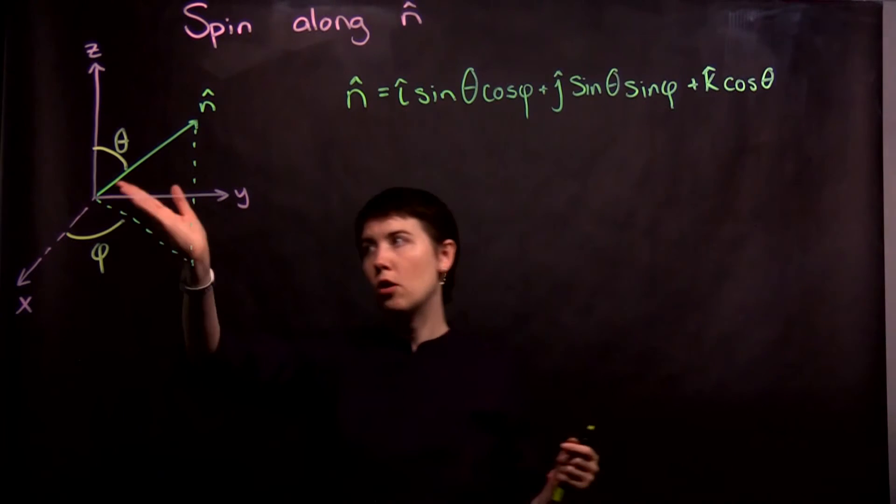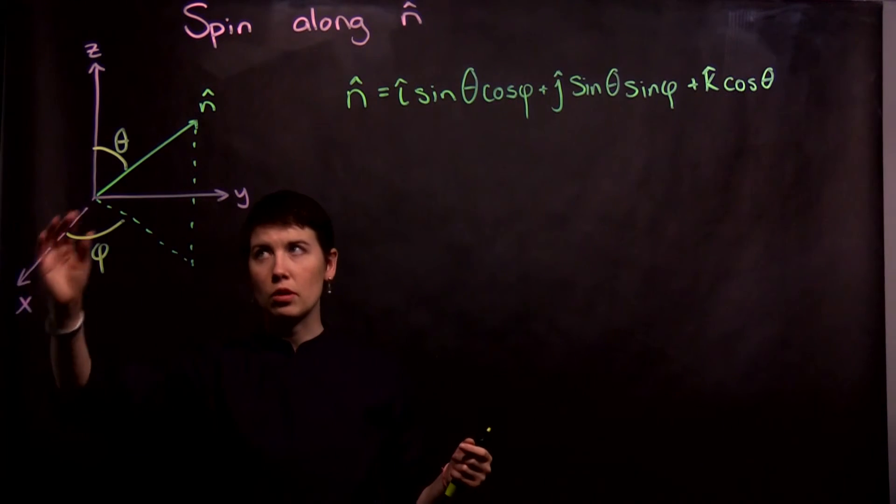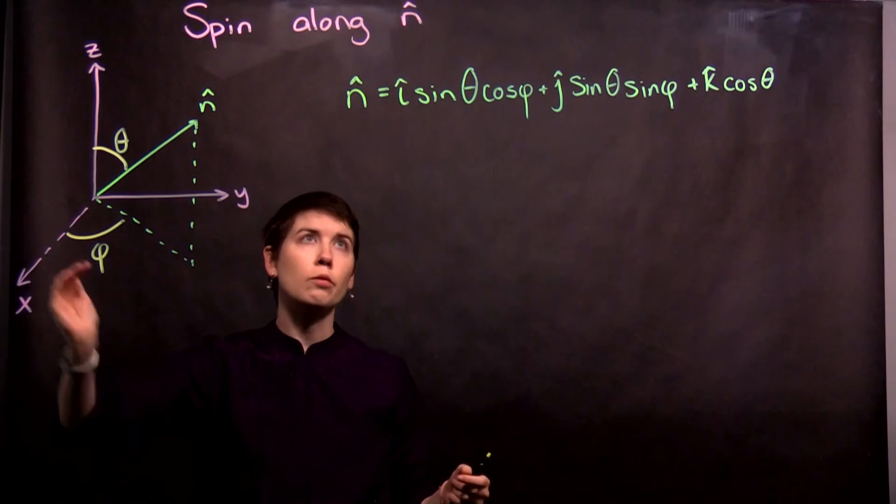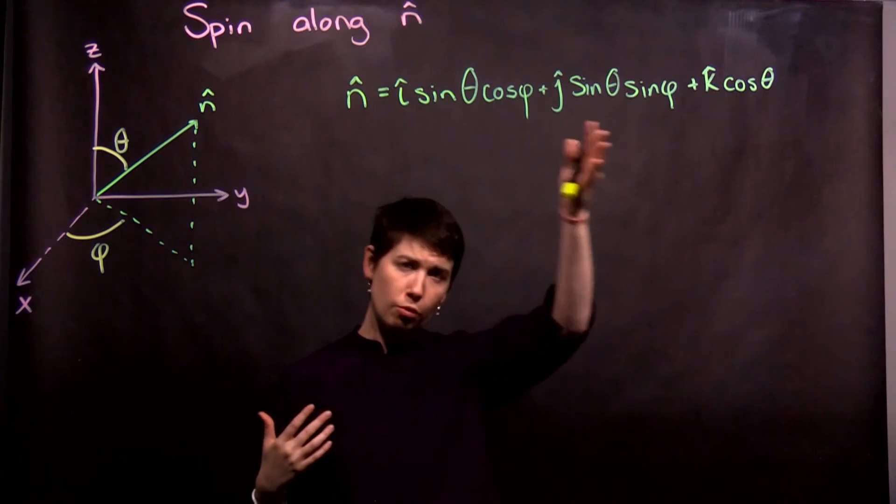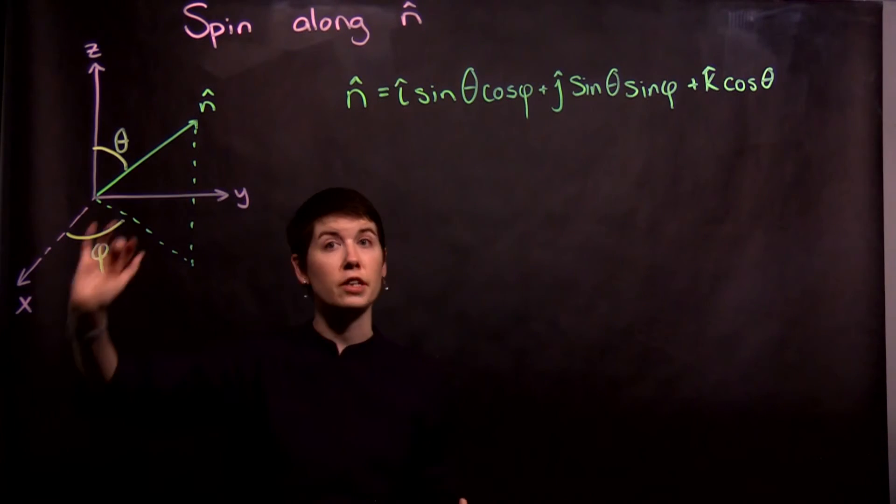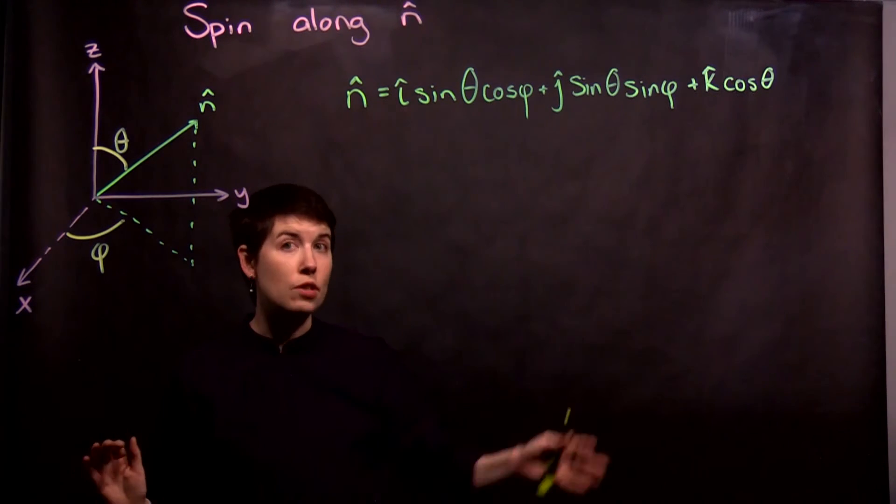So these terms would drop out if theta was equal to 90, or pi over two, and phi was equal to zero. So you should be able to prove to yourself by using the three of these simplifying cases of being on one of our Cartesian directions to see that this works.